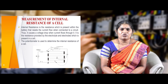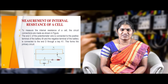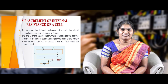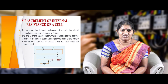A potentiometer is also used to determine the internal resistance of a given cell. To measure the internal resistance, circuit connections are made as shown in the figure. The apparatus consists of a battery, key, galvanometer, potentiometer wire, jockey, resistance box, and rheostat.